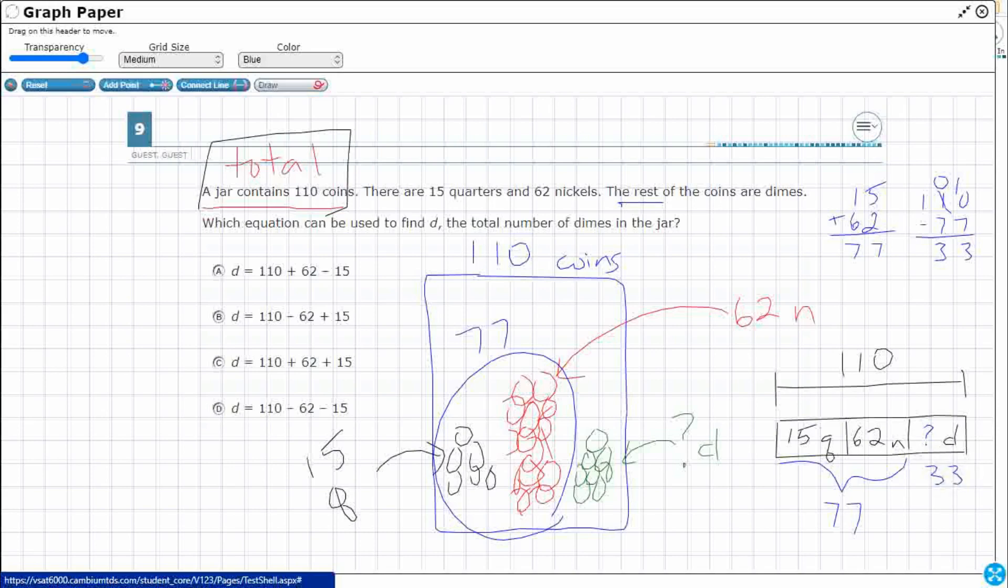So what did I do? Well, I added my 15 and my 62, right? So I see this right here. And I see that right there.